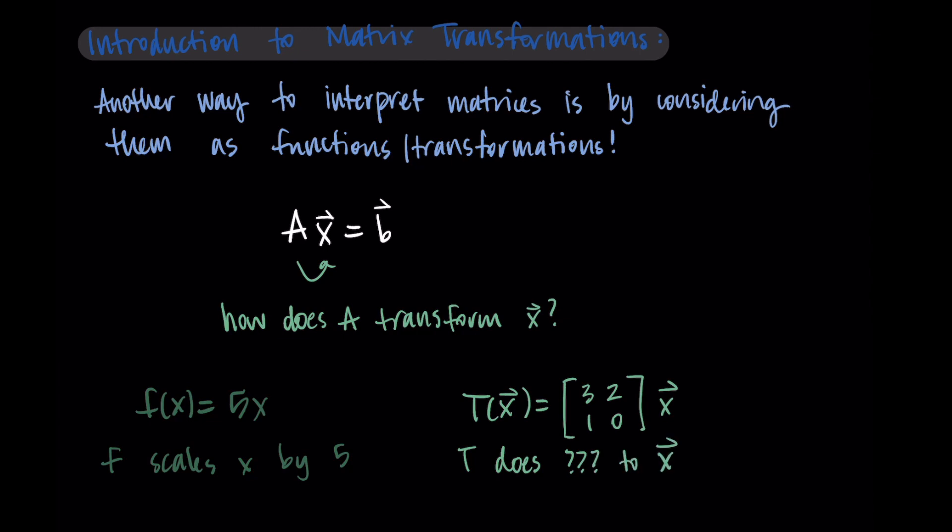So it's inputting a vector, and it's outputting a matrix times a vector multiplication. And what is it really doing to x? In the f(x) version, we could just say that it scales x by 5. And we'd like to be able to say something similar for this function involving a matrix, if possible.